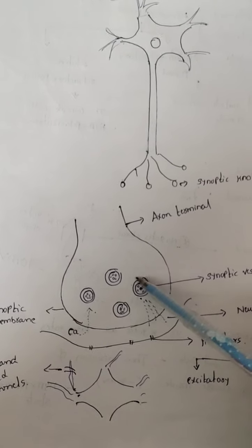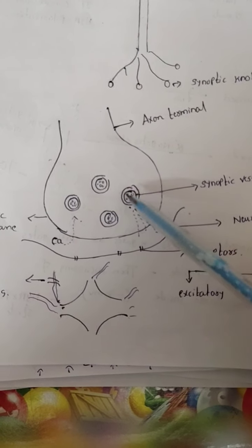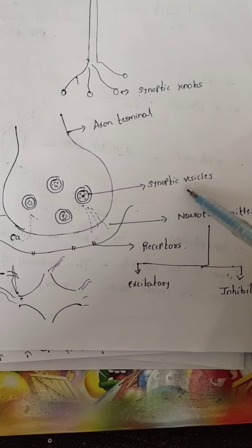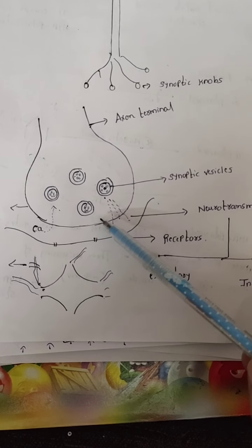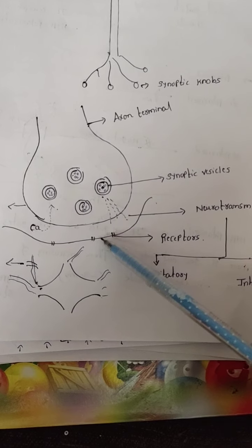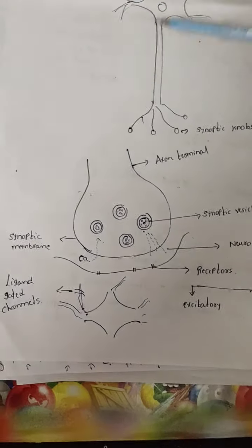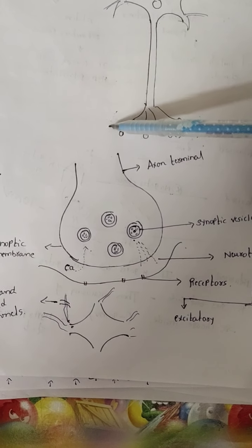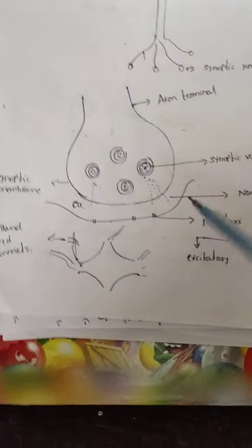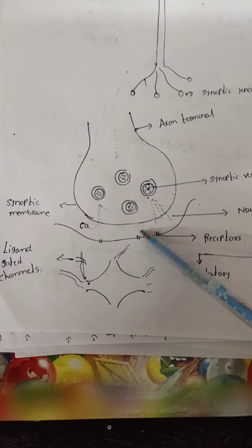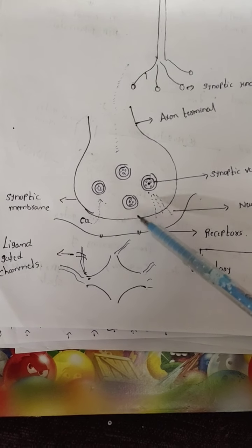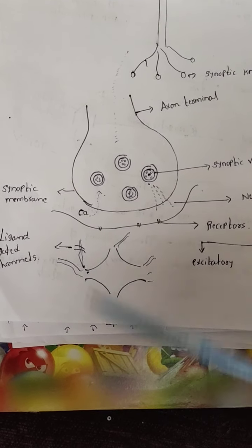At the synaptic node there are chemical storage vesicles called synaptic vesicles. There is a pre-synaptic membrane and a post-synaptic membrane with receptors. The junction between two neurons is called a synapse, the space is called the synaptic cleft, and it is filled with synaptic fluid. In the synaptic fluid, the most abundant element is calcium.